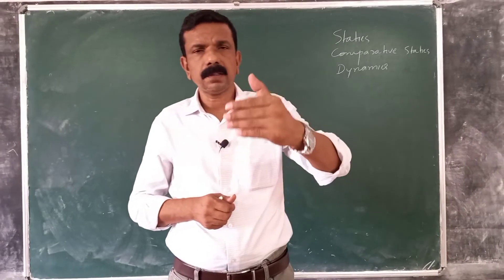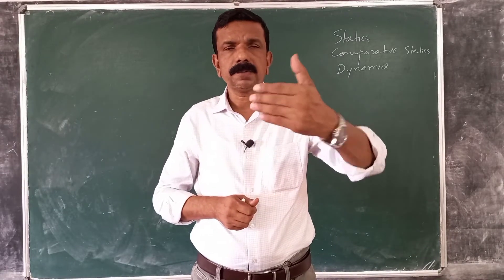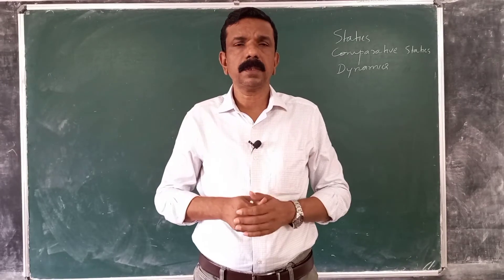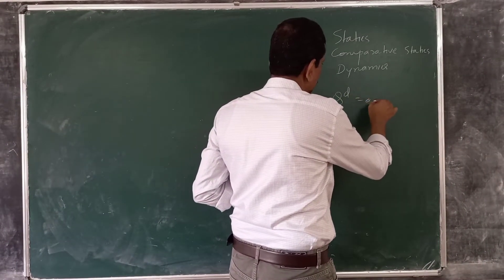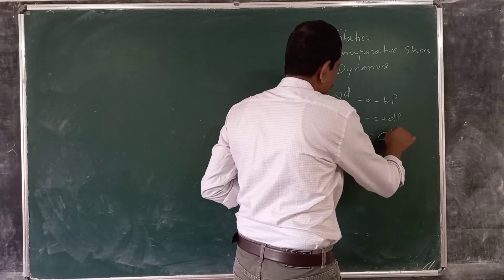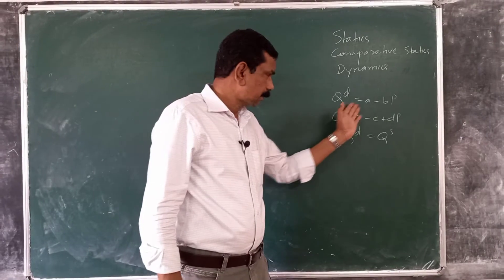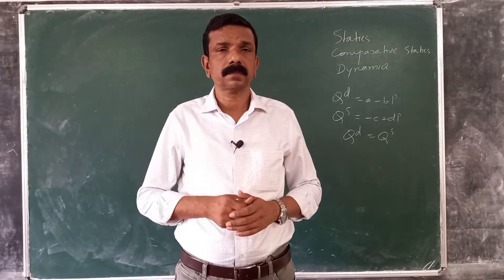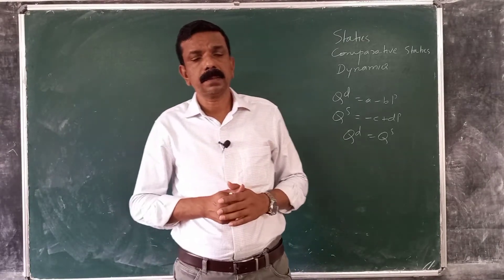If an exogenous variable in the model changes over time, values of the endogenous variables also change. In static analysis, our concern is determination of equilibrium values of endogenous variables only. For example, consider a model: qd = a − bp, qs = −c + bp, and qd = qs. Equating demand to supply and substituting, you will get equilibrium values of the endogenous variables — quantity and price.